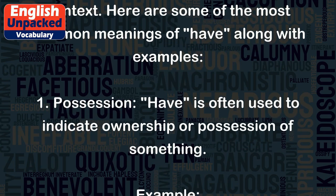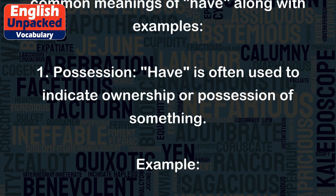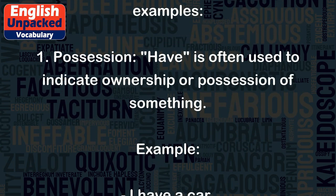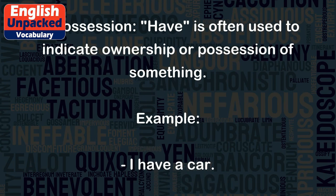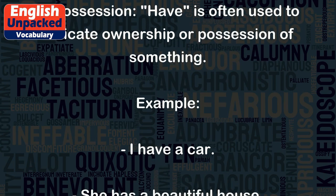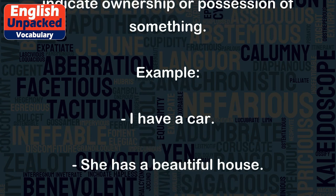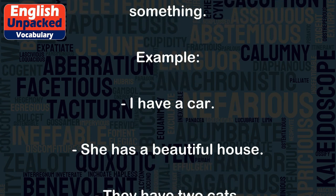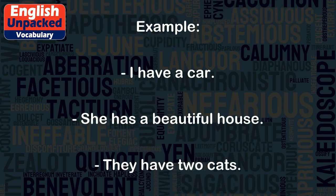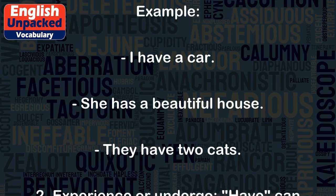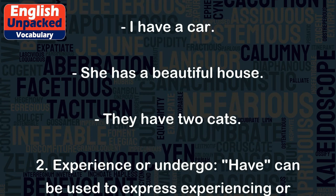1. POSSESSION. HAVE is often used to indicate ownership or possession of something. Example: I have a car. She has a beautiful house. They have two cats.